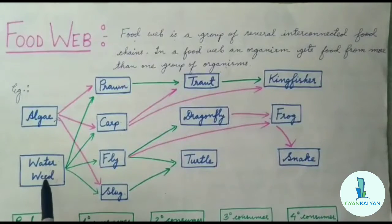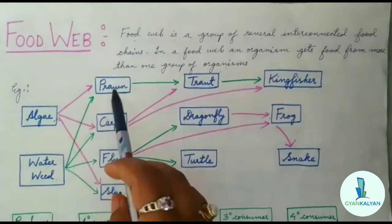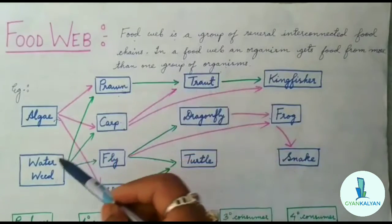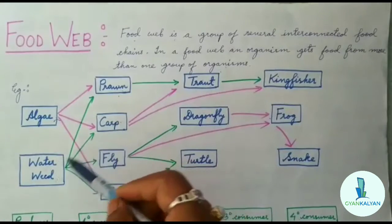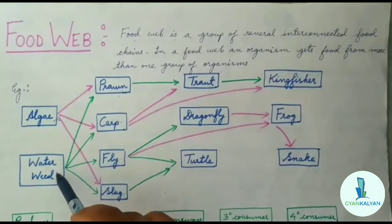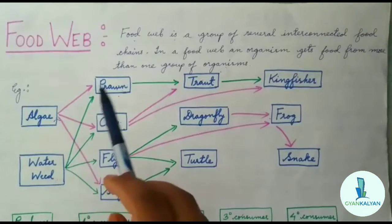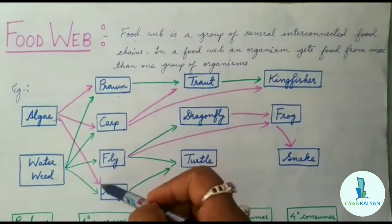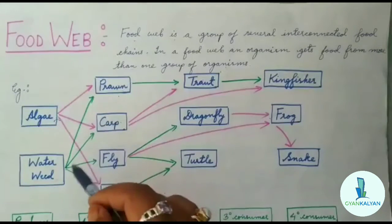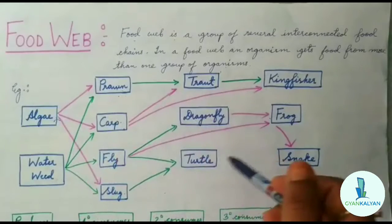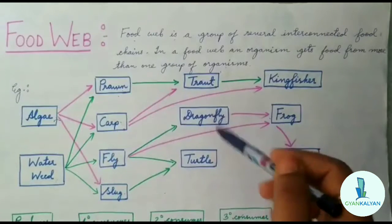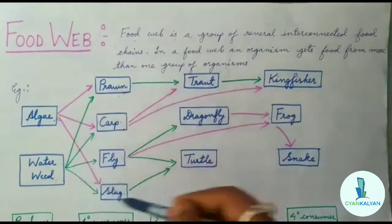The next example is waterweed. Waterweed is eaten by prawn, then this prawn is eaten by trout, then this trout is eaten by kingfisher. Waterweed is also eaten by carp, also eaten by fly, and also eaten by slug. So waterweed is not only connected to one organism — it is connected to more than one organism of a food chain. Hence this is an interconnection of food chains, and there are connections between these food chains, making it a food web.